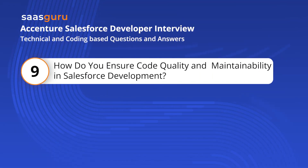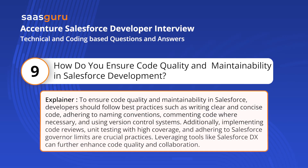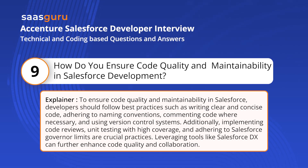Question 9: How do you ensure code quality and maintainability in Salesforce development? To ensure code quality and maintainability in Salesforce, developers should follow best practices such as writing clear and concise code, adhering to naming conventions, commenting code where necessary, and using version control systems. Additionally, implementing code reviews, unit testing with high coverage, and adhering to Salesforce governor limits are crucial practices. Leveraging tools like Salesforce DX can further enhance code quality and collaboration.